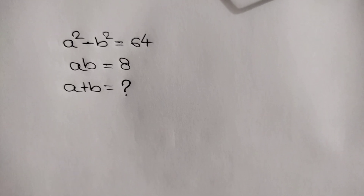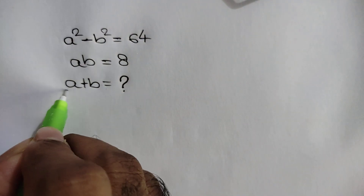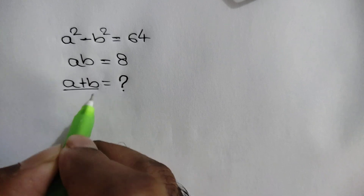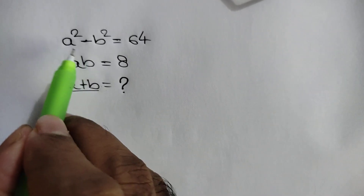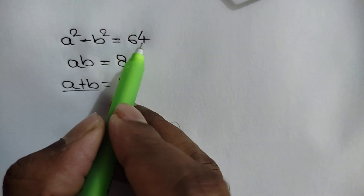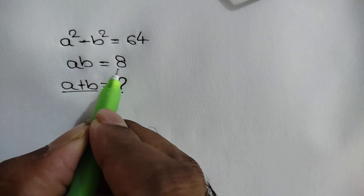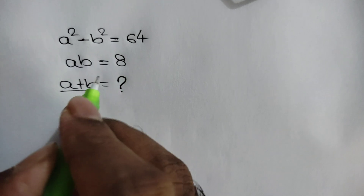Hi everyone. In this video I am going to show how to find the value of a plus b, where a squared minus b squared is equal to 64 and ab is equal to 8.